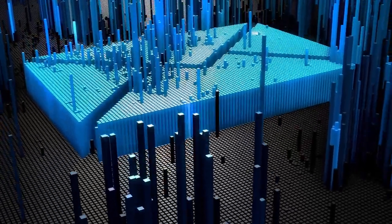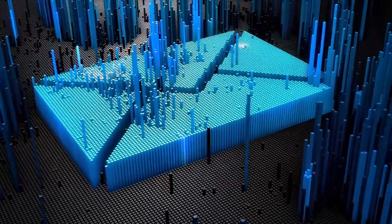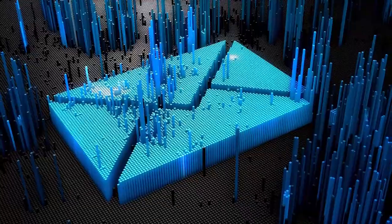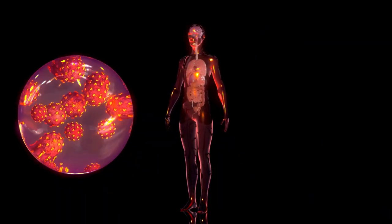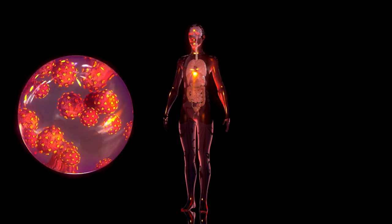The observable universe is the part of the universe that we can actually see and study using telescopes and other scientific tools. This part includes everything from nearby stars and planets to the farthest galaxies we can detect.